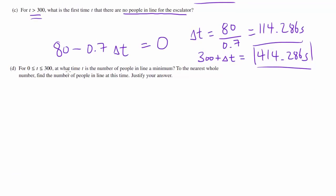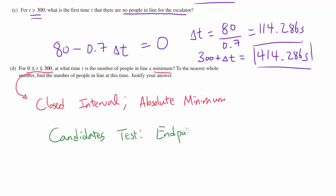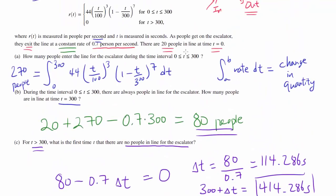Let's go on. The final part. For t between 0 and 300, at what time t is the number of people in line a minimum? Notice that they gave us a closed interval. Closed interval. And we want to find the absolute minimum. Absolute minimum. So we have to use the candidates test. So we are going to use candidates test, which means we are going to look at endpoints. We are going to look at endpoints of this closed interval. So 0 and 300. And we are going to look at the critical points. Critical points are where the F prime is 0 or undefined. And we are going to see which of these values are going to get us the minimum value. But how do we find the critical point?